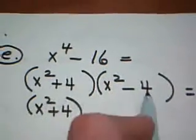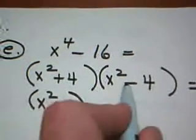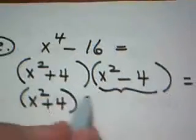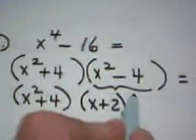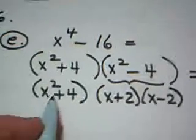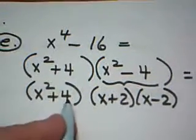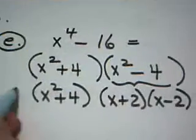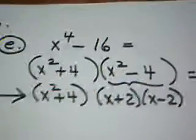x squared minus 4, however, is the difference of two perfect squares again. So this subdivides into x plus 2 times x minus 2, which makes my final answer x squared plus 4 times the quantity x plus 2 times the quantity x minus 2. And that is my final answer.